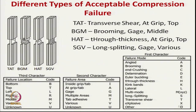For compression failure, the mode is also expressed in three letters: first = mode of failure, second = failure area, third = location. TAT means T = transverse shear, A = at grip, T = top location — meaning compressive failure occurred at the top grip via transverse shear.